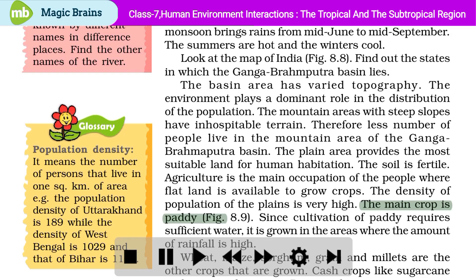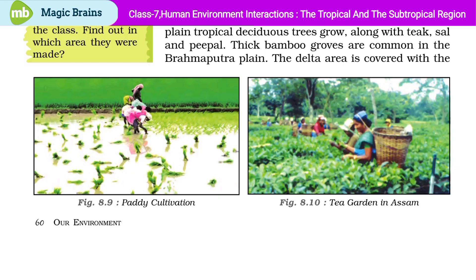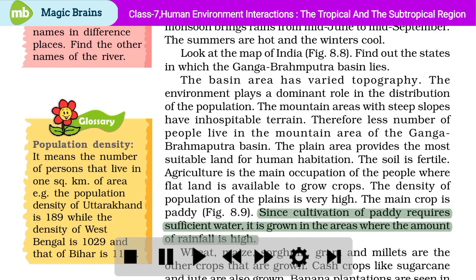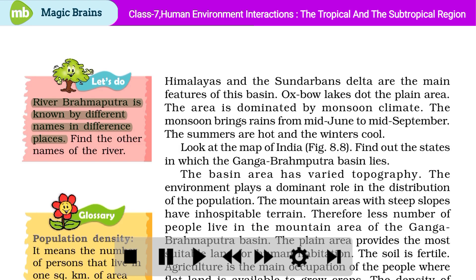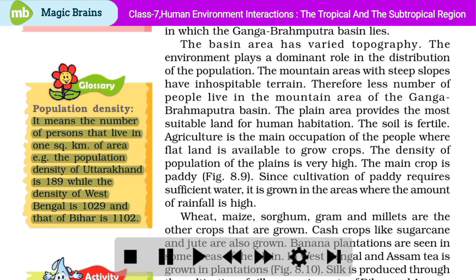The main crop is paddy. Since cultivation of paddy requires sufficient water, it is grown in the areas where the amount of rainfall is high. The river Brahmaputra is known by different names in different places. Population density means the number of persons that live in one square kilometer of area. For example, the population density of Uttarakhand is 189, while the density of West Bengal is 1029, and that of Bihar is 1102.